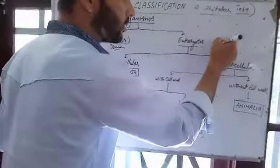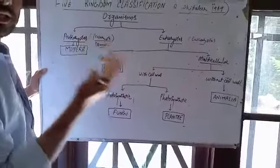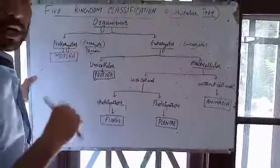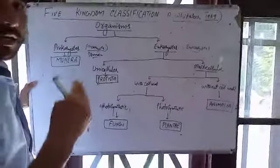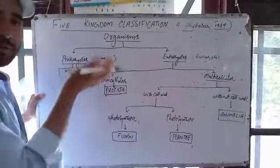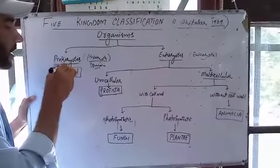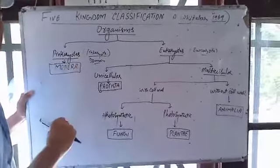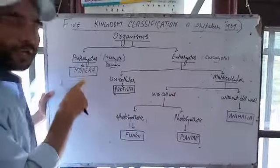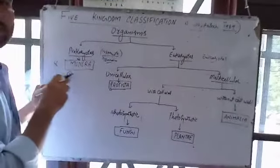Prokaryotes have a primitive nucleus, while eukaryotes have a modern, advanced nucleus. Under the domain of prokaryotes, there is only one kingdom — Kingdom Monera. It is the first kingdom.